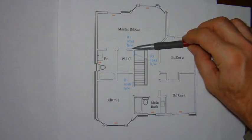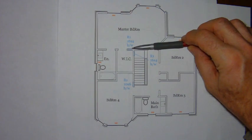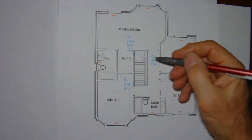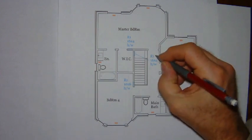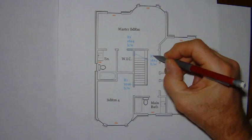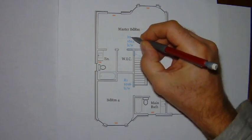The master bedroom will have the grill on the bedroom side, so this is actually bedroom return air number four and return air number five.